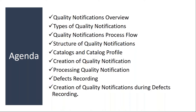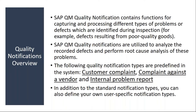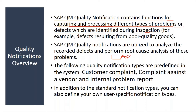So these are the topics we will be covering in quality notifications. Quality notifications contain functions for capturing and processing different types of problems or defects which are identified during inspection. Basically, quality notification is for CAPA — to capture CAPA, corrective action and preventive action.